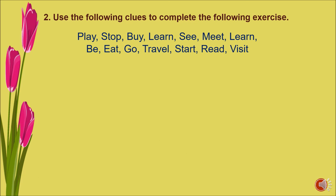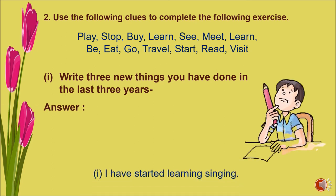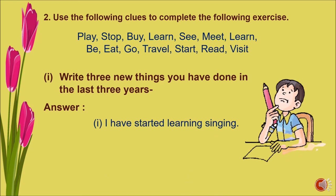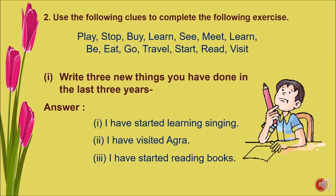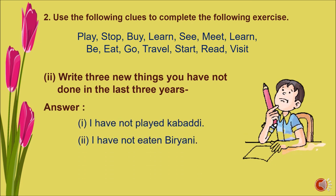Question two: use the following clues — play, stop, buy, learn, see, meet, be, eat, go, travel, start, read, visit — to complete the exercise. Write three new things you have done in the last three years: I have started learning singing; I have visited Agra; I have started reading books. Write three things you have not done: I have not played Kabaddi; I have not eaten biryani; I have not met my best friend Ajit.